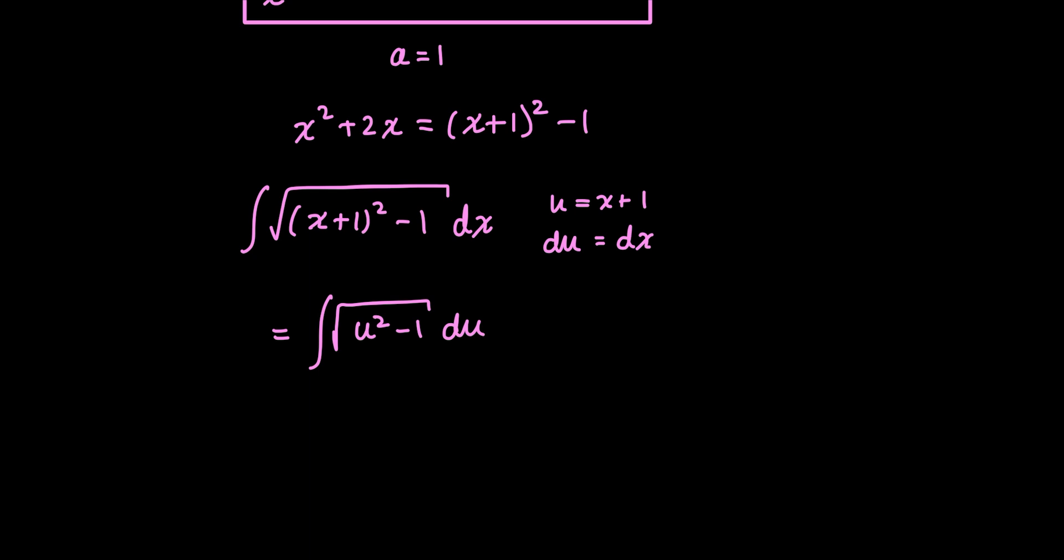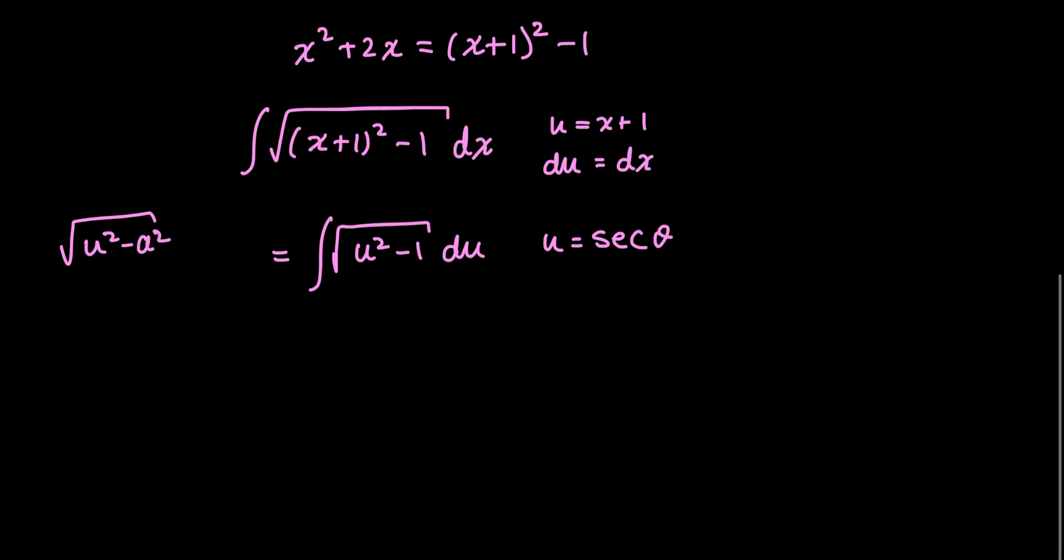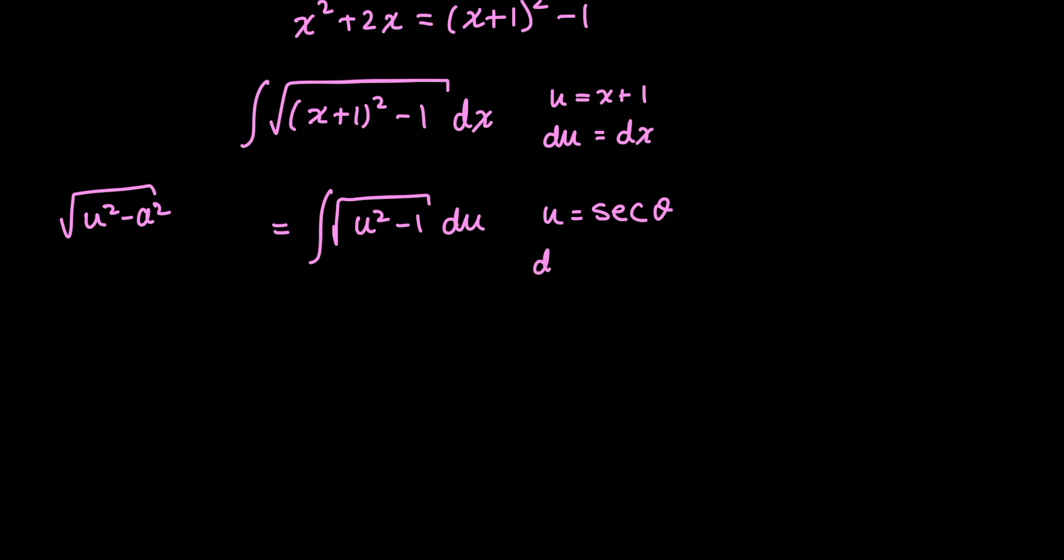This looks like a trig substitution. And probably the least popular trig substitution, a secant substitution. So, I can define u as secant theta because I have the form u squared minus a squared. And in this case, a is just 1. And then du is just the derivative of secant theta, which is secant theta tan theta d theta.